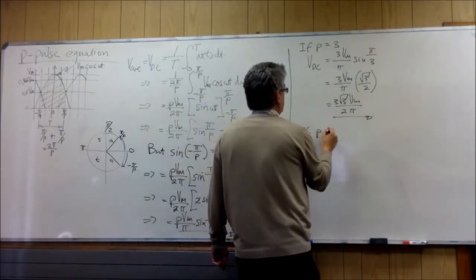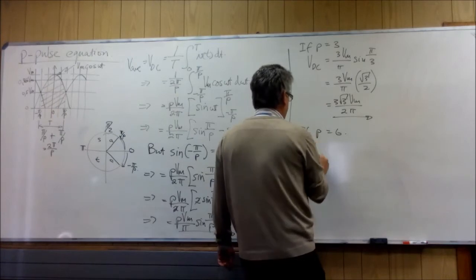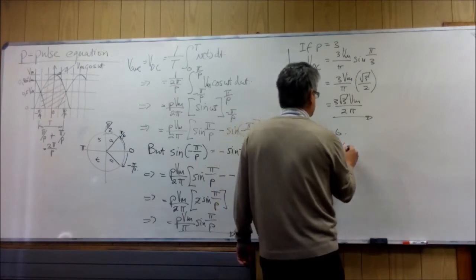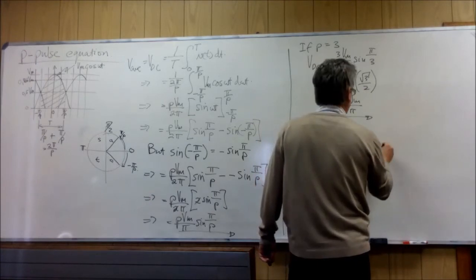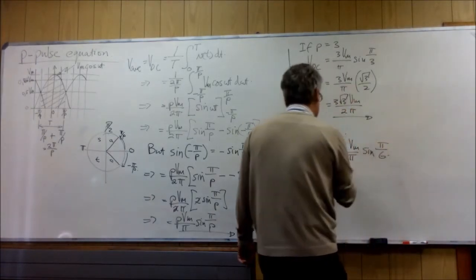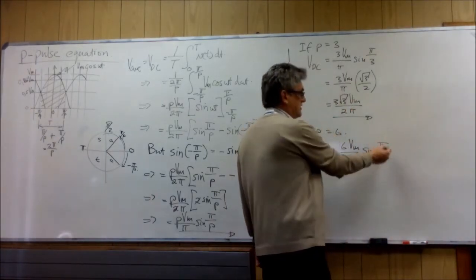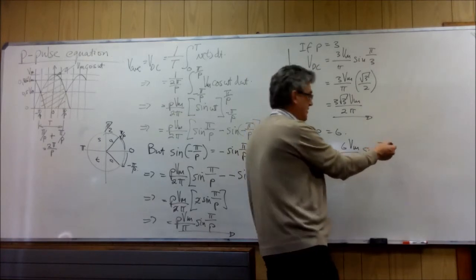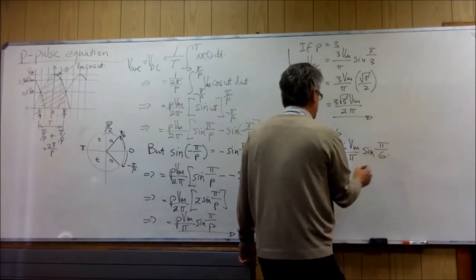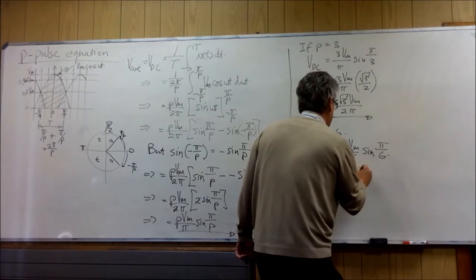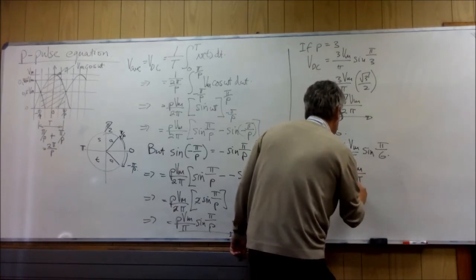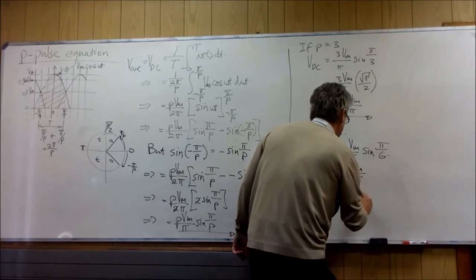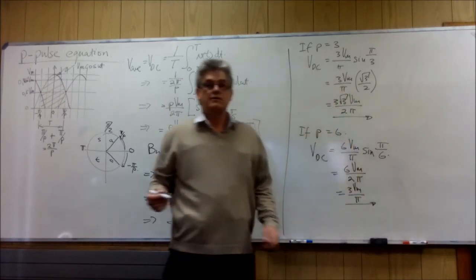Now if p = 6, then V_DC = (6·V_max / π)·sin(π/6). The sin of π/6, which is 30°, is 0.5 — that's 1/2. So we get 6·V_max over 2π, which equals 3·V_max over π.